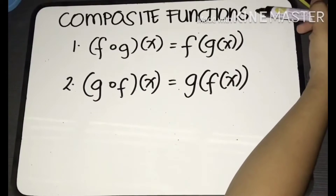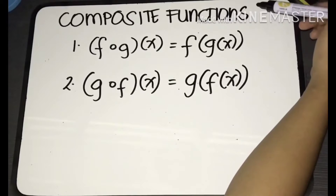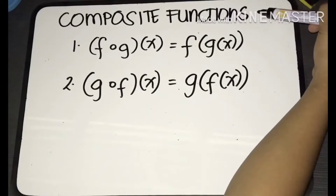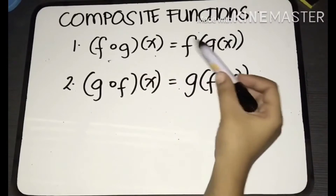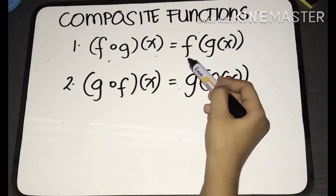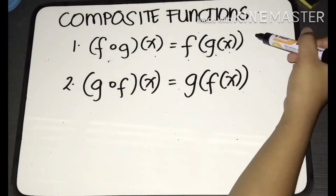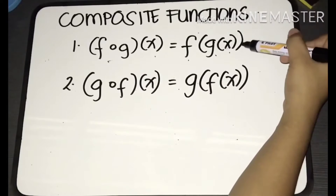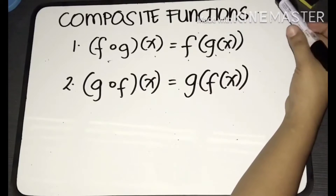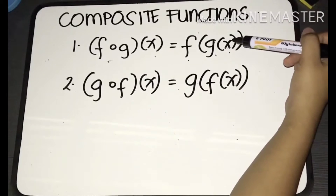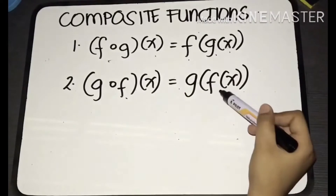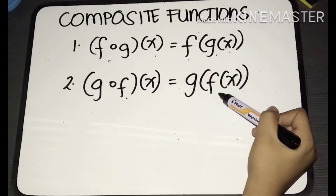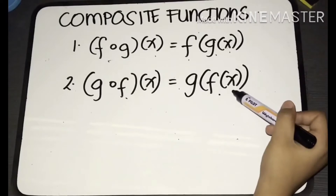Let's now have the last topic for functions, which is composite functions. We have f of g of x, sometimes read as f circle g of x. We also have g of f of x, which could be written as g circle f of x.